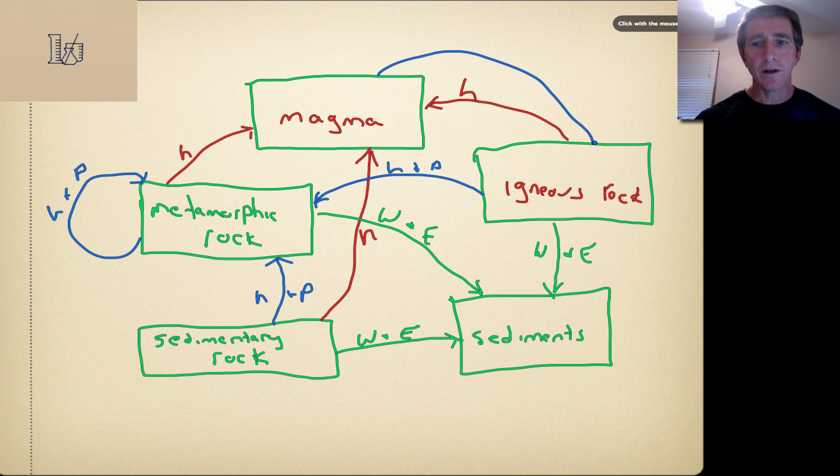We'll take our magma and cool it into igneous rock. We'll take our sediments and deposit and cement them to make sedimentary rock. The diagram looks a little complicated but actually it's simple. It's five boxes with four arrows each with an extra arrow for metamorphic rock. It comes back to itself.